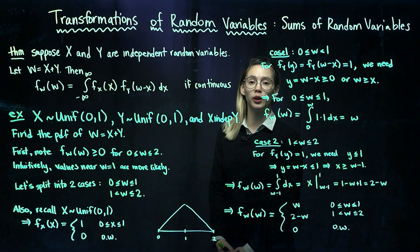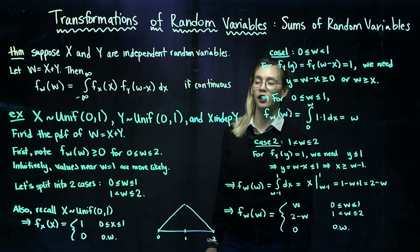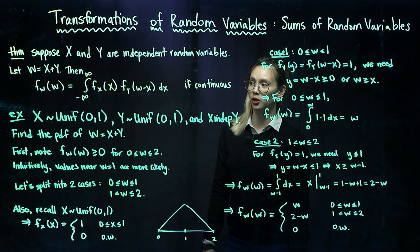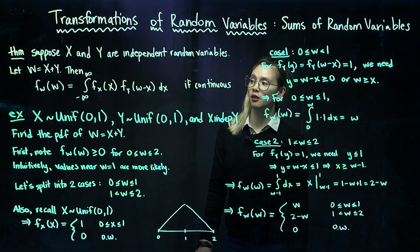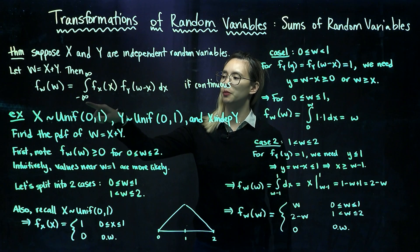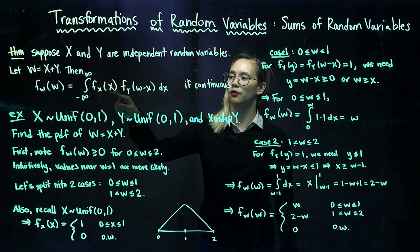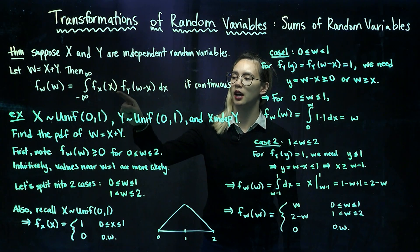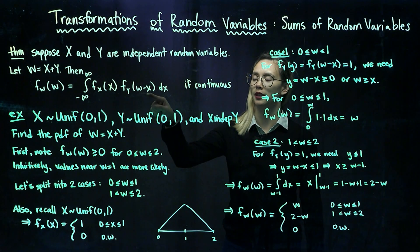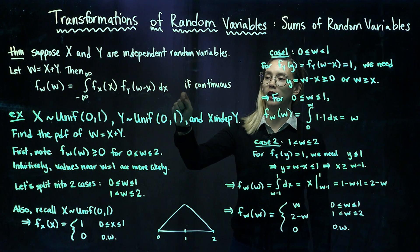In our previous video, we established this theorem: suppose x and y are independent random variables and let w equal x plus y. Then the PDF for w is equal to the integral from negative infinity to infinity of the PDF for x times the PDF for y with w minus x plugged in, all integrated with respect to x.